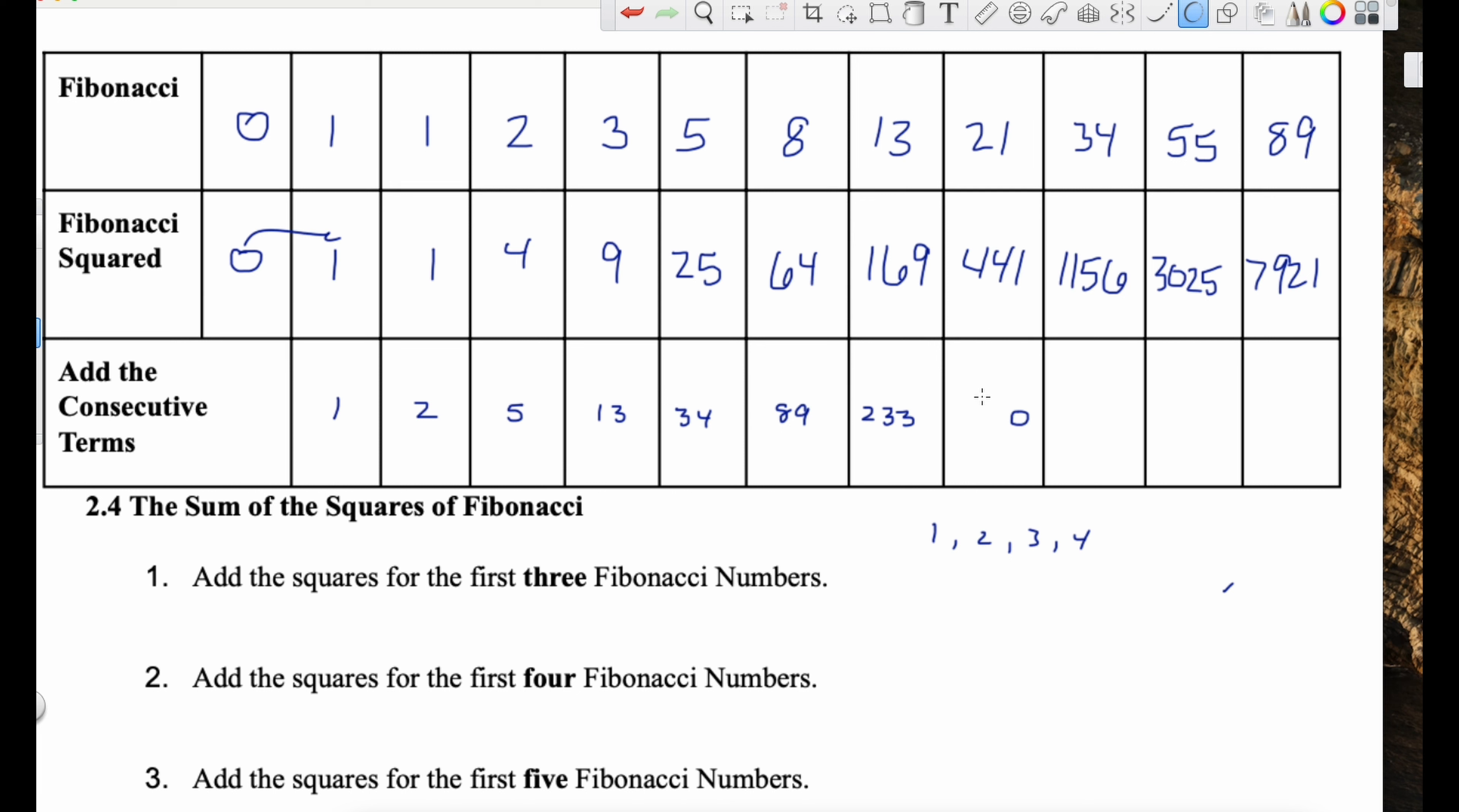Probably don't need to go all the way out here to see the pattern. But since I told you to do it, 4181. And then the last one, 3025 plus 7921 is 10,946.